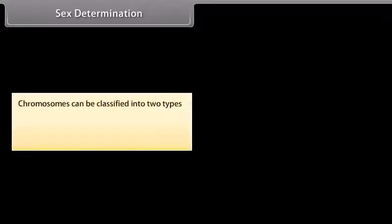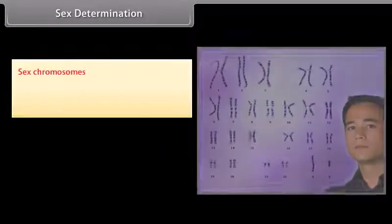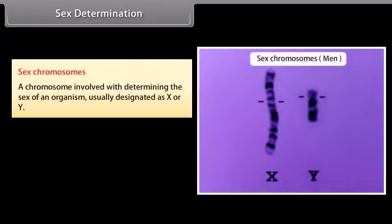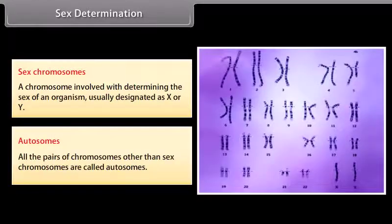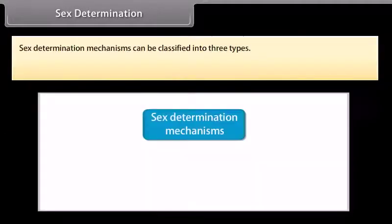Sex Determination. Chromosomes can be classified into two types: sex chromosomes and autosomes. Sex chromosomes are chromosomes involved in determining the sex of an organism, usually designated as X or Y. Autosomes are all the pairs of chromosomes other than the sex chromosomes. Sex determination mechanisms can be classified into three types.